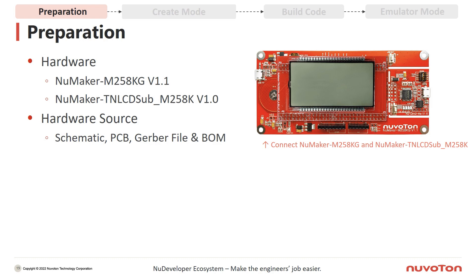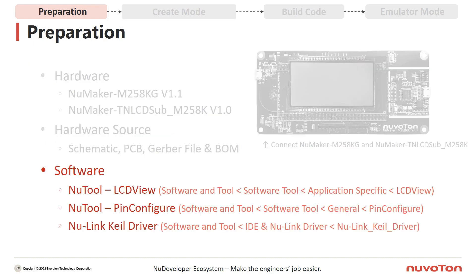For the preparation part, we take the NuMaker M258-KG and a Comsec LCD panel whose part number is TNLCDSUB_M258-K. You can find all hardware documents on our website, such as the schematic, gerber file, form, etc. As for software preparation, we need three software tools: LCDView, pin configure which is used to configure pins, and NuLink Keil driver used to support the plugin Keil IDE version.